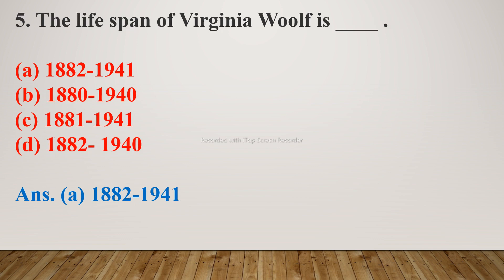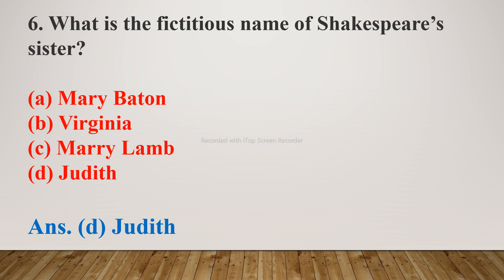Question number 5: The lifespan of Virginia Woolf is — options are A. 1882–1941, B. 1880–1940, C. 1881–1941, D. 1882–1940. The right answer is A. 1882–1941. Question number 6: What is the fictitious name of Shakespeare's sister? Options are A. Mary Batten, B. Virginia, C. Mary Lamb, D. Judith. The right answer is D. Judith.